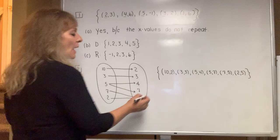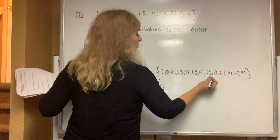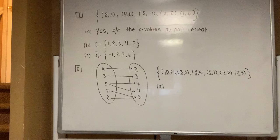Part A says determine whether or not example two is a function and justify your answer. And all you have to do is look at the x values. If the x values do not repeat, then it's a function, but they repeat. So it's automatically not a function because the x values repeat.